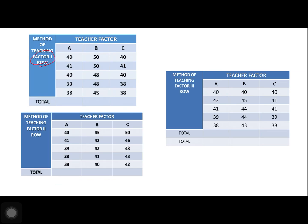For our data layout, the columns represent method of teaching 1, 2, and 3, while the rows represent teacher factors A, B, and C. For method of teaching 1: teacher A gives a subtotal of 198, teacher B gives 241, and teacher C gives 197, for a row total of 636.